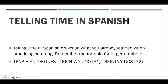When you're telling time, you're going to be drawing on what you've already learned with counting. Remember the formula we had for bigger numbers — we always take the tens, then the word 'and' in Spanish which is 'e', and then the ones. For example, for 31 we say 'treinta e uno', for 32 'treinta e dos', and so on.